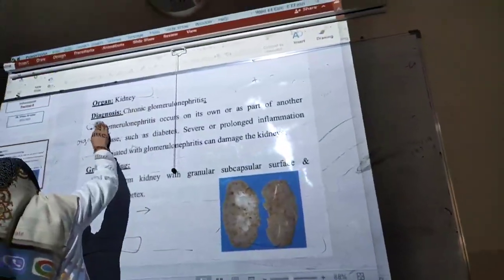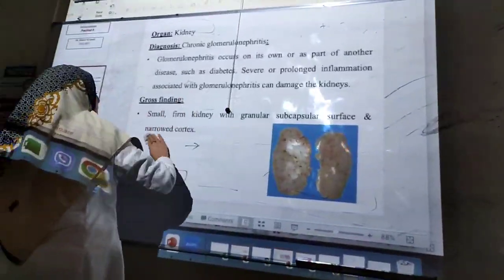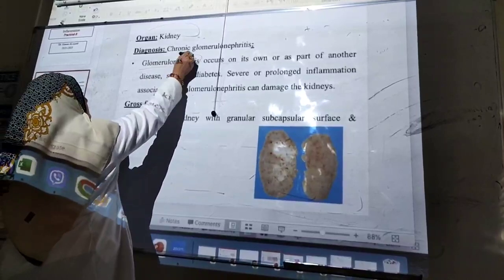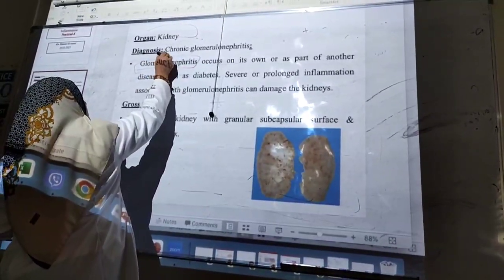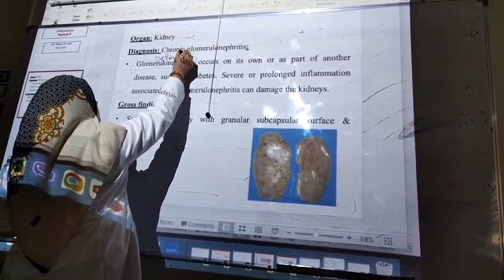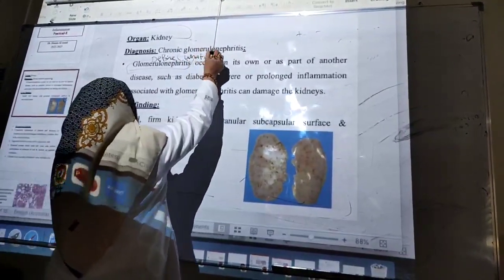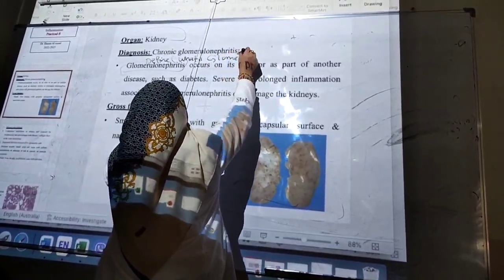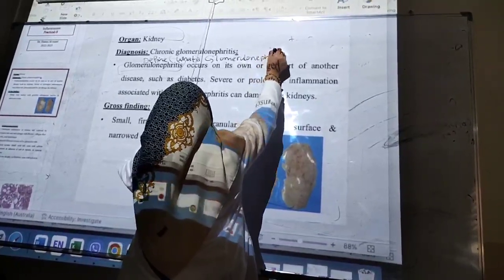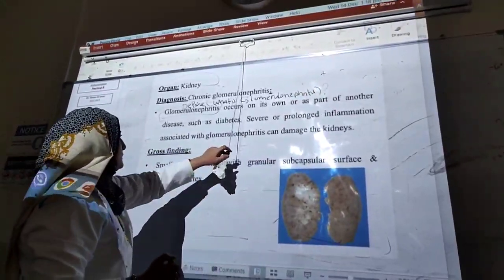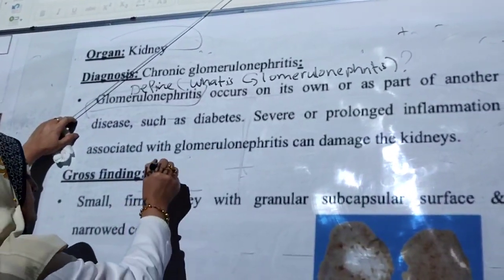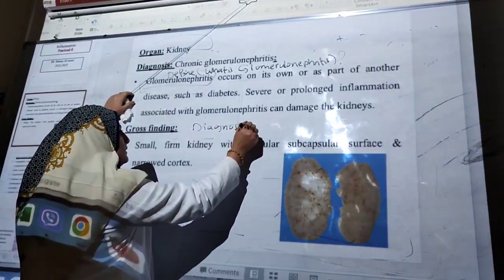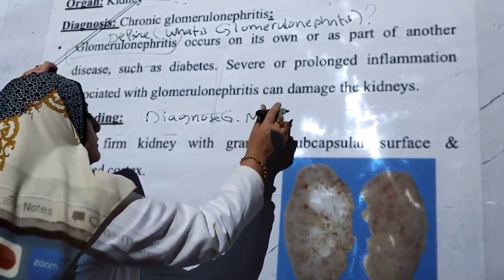Which is the chronic nephritis. So define what is the glomerulonephritis. And once they diagnose the glomerulonephritis grossly.